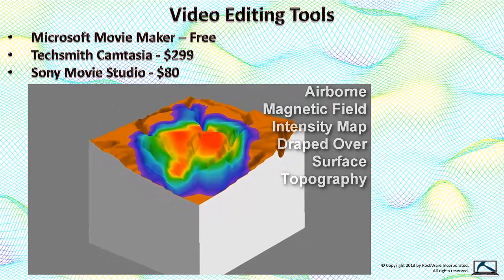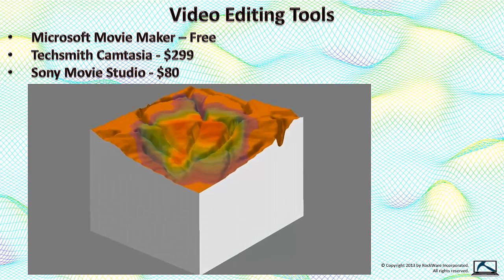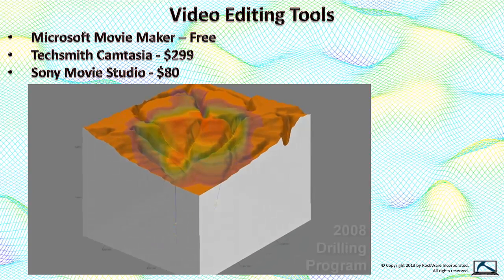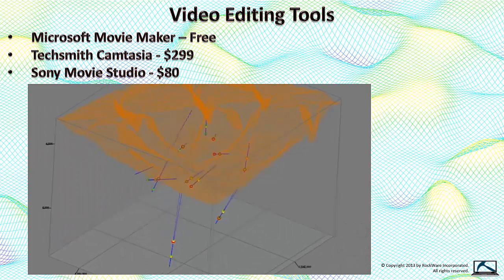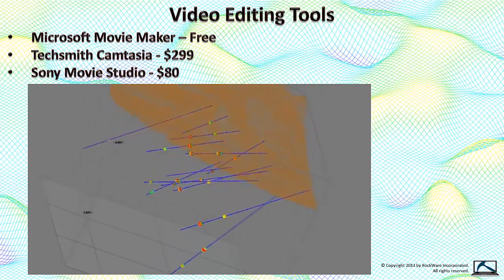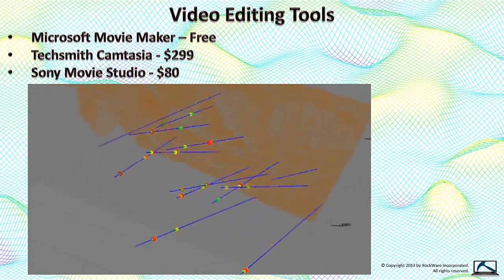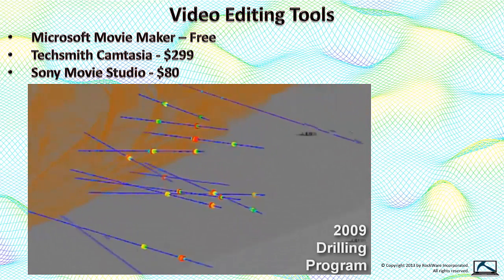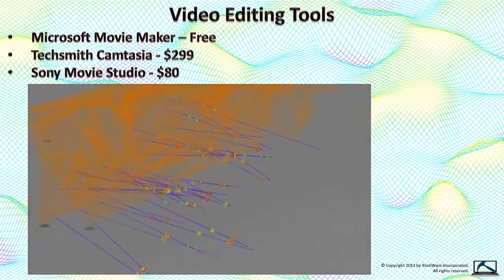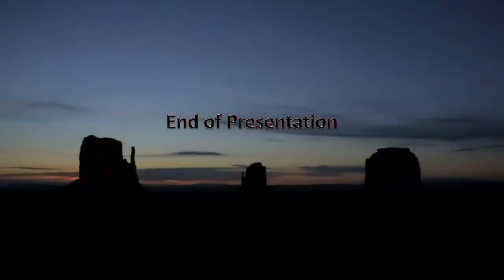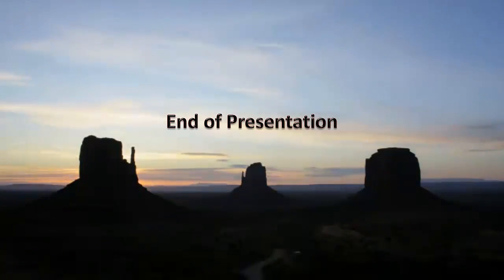The annotation, pans, and zooms were added with Camtasia. The fades were added with Sony Movie Studio. Personally, I couldn't live without either of these products — well, I could live, but life wouldn't be any fun. So that's it. Get to work and make some movies. Thanks for watching.